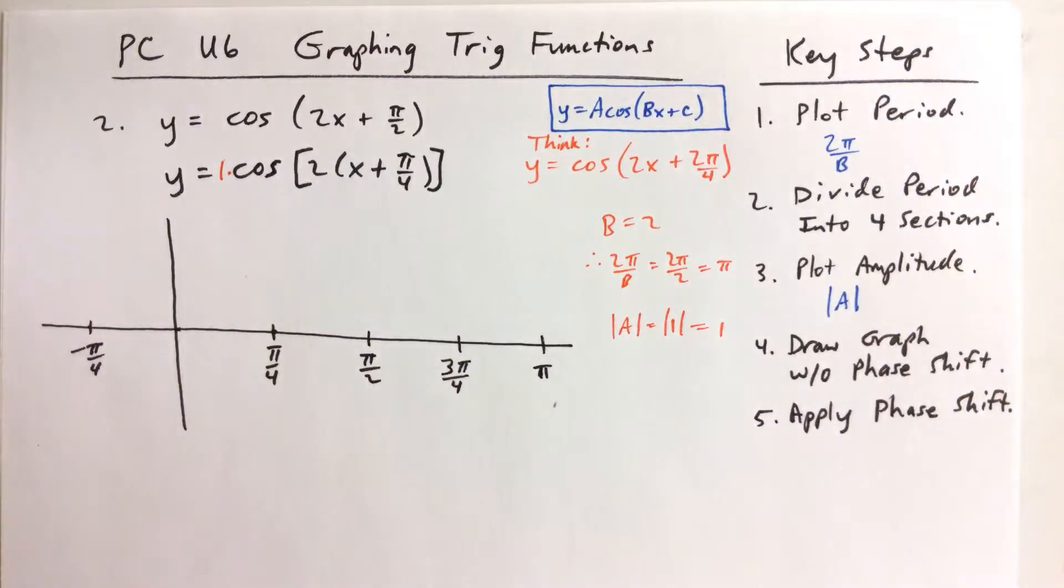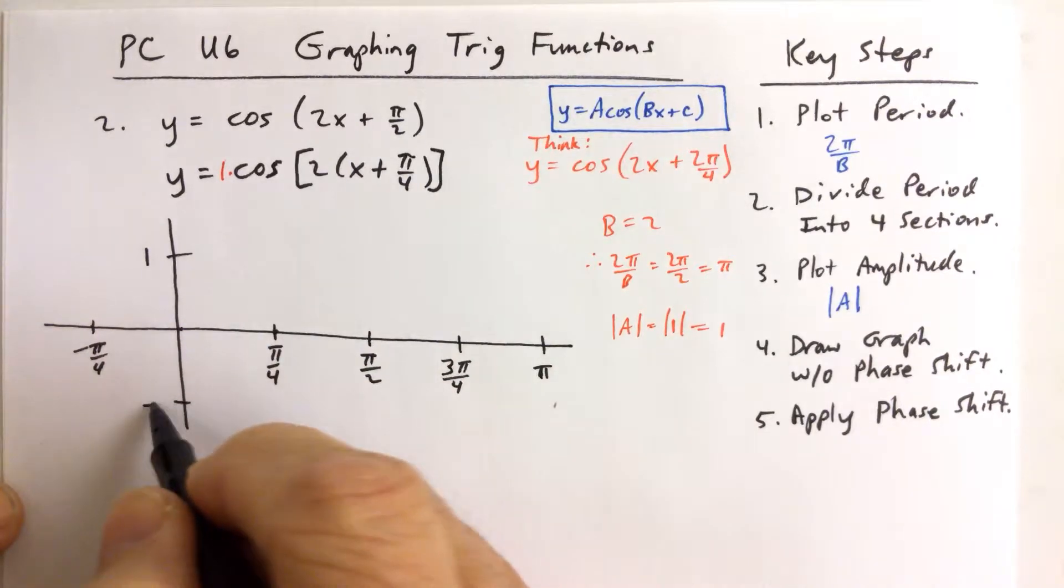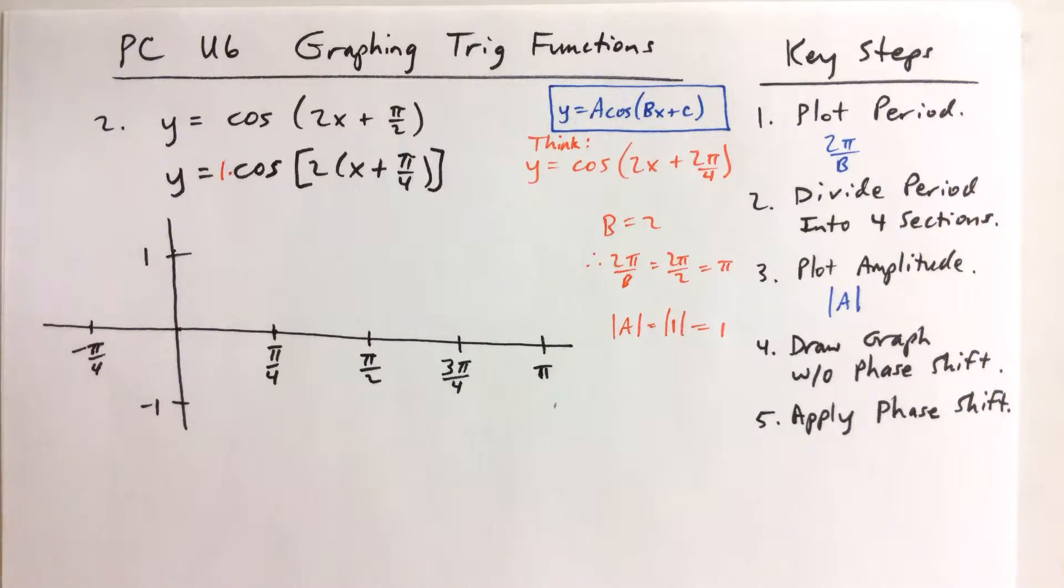So the absolute value of a being the absolute value of 1, which is 1, that's our amplitude. That's how high up we go and then how far down we go as well. So up here it's positive 1, down there it's negative 1.